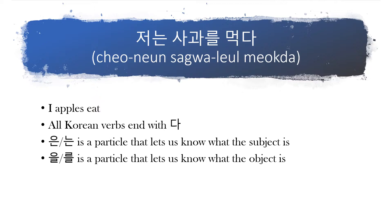You might be thinking: Jessica, you said 저 means 'me,' so why does it say 저는? Well, remember the Korean word order is subject, object, verb. We have little markers that let us know what the subject is and what the object is. We add 는 to our subject. 저 is the thing doing the verb — that's the subject — so we add 는 to it: 저는. We did the same thing to 사과. 사과 means 'apple,' and we add 를 to the end, which is our object marker — it lets us know the thing that the verb is acting on. So: 저 (me), 는 (subject marker), 사과 (apple), 를 (object marker), 먹다 (to eat — basic form, not conjugated).